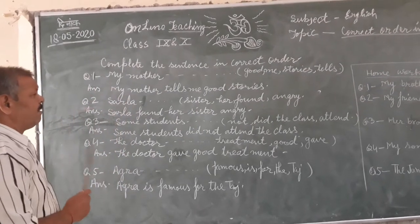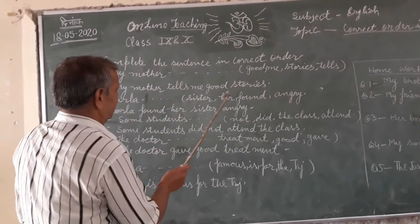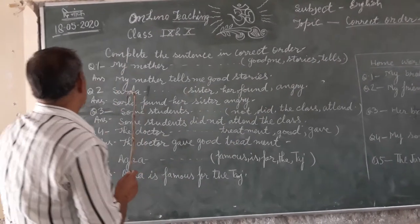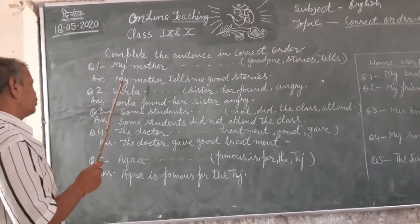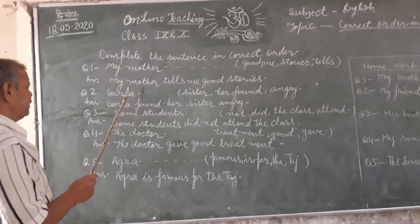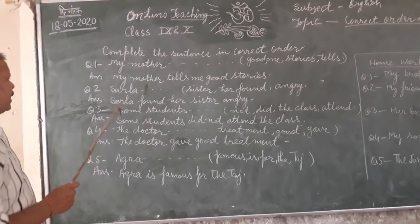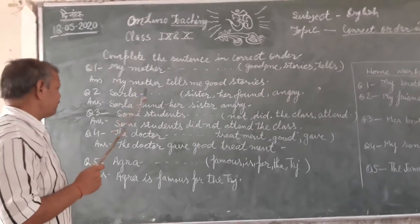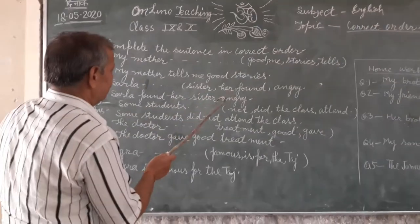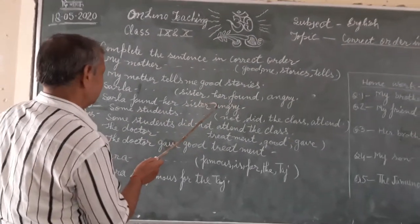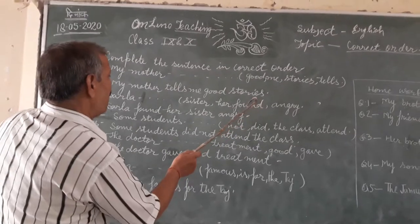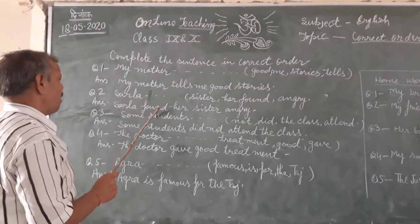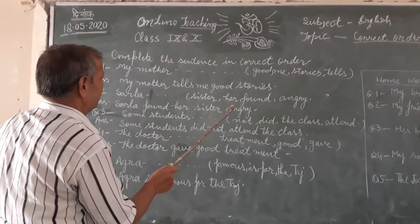The second sentence is: Sarla, in bracket: sister, her, found, angry. Since Sarla is the subject, we have to keep the word after the subject. In this sentence the verb is 'found'. So the correct order is: Sarla found her sister angry.